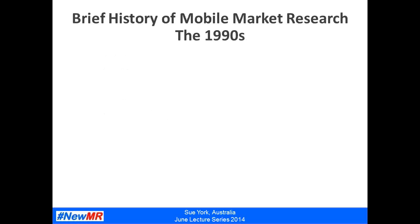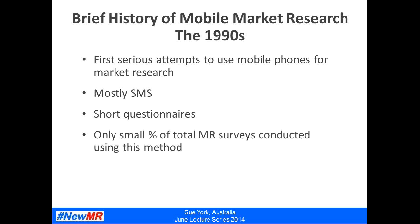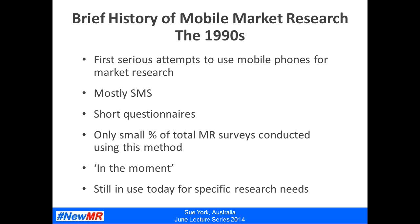Now I'd like to walk you through a brief history of mobile market research. It's really only in the 1990s that the first serious attempts to use mobile phones for market research took place. In the early days this was very much research conducted via SMS — questionnaires tended to be very short, and it was really only a small percentage of total market research surveys conducted this way. Some of the early uses tended to be for in-the-moment surveys where SMS could be used in conjunction with short surveys. SMS surveys are still in use today for quite specific research needs.